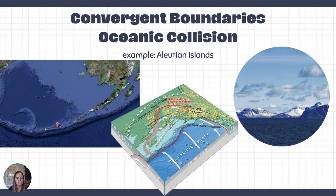This also happens in the Aleutian Islands, which is the tail of Alaska. The Aleutian Islands is a sequence of volcanoes formed from oceanic-oceanic collision, where the Pacific Plate is subducting underneath the oceanic portion of the North American Plate.